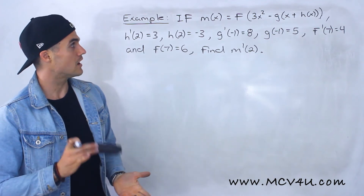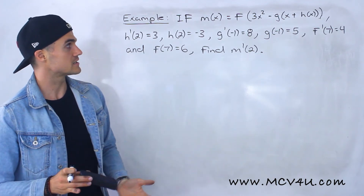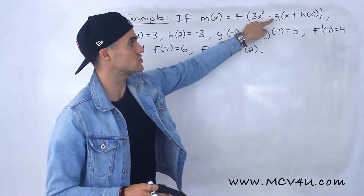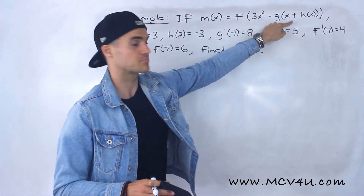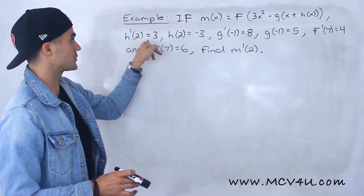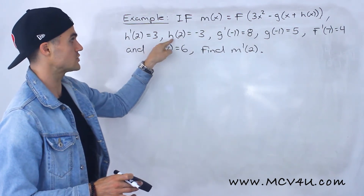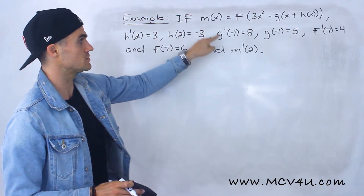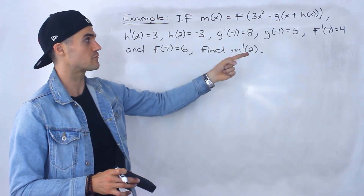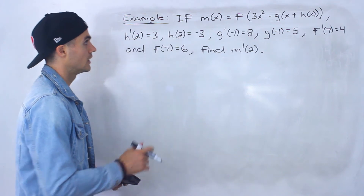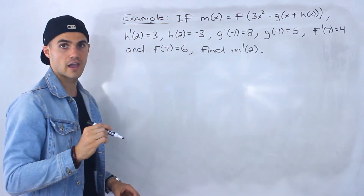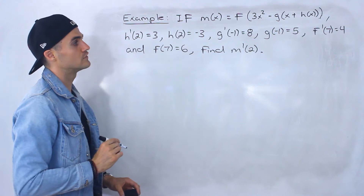So if m of x is equal to f of (3x squared minus g of (x plus h of x)), we're given that h prime of 2 equals 3, h of 2 equals negative 3, g prime of negative 1 equals 8, g of negative 1 equals 5, f prime of 7 equals 4, and f of 7 equals 6. We have to find m prime of 2.